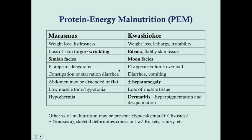Marasmus features weight loss and listlessness. Unlike Kwashiorkor, you see loss of skin turgor and wrinkling, a simian facies — a more cachectic, skinny face. These patients appear dehydrated. They tend to have constipation, though they can have starvation diarrhea where small pieces of stool or tissue with a lot of mucus get passed. The abdomen may be distended or flat, there's low muscle tone or hypotonia, and they're often hypothermic — the body is slowing the metabolic rate because it lacks nutrients.